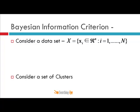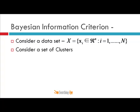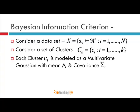This is the Bayesian Information Criterion. We are back to clustering. Consider a set of clusters CK at level K. We have K different clusters, and each cluster CI is modeled as a multivariate Gaussian with mean vector mui and covariance matrix sigma i.